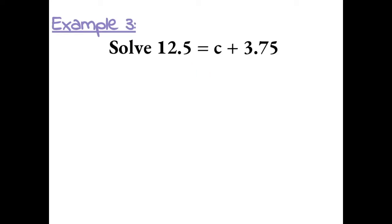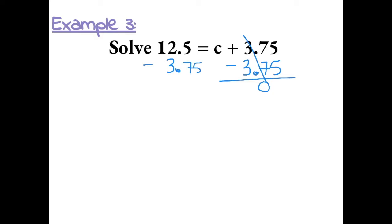Solve 12.5 equals c plus 3.75. We want to get c by itself, so I have to do the inverse operation of adding 3.75, which is to subtract 3.75. These are inverse operations, so they equal 0 and cancel out. Whatever we do to one side of the equal sign, we have to do to the other side, so we have to do 12.5 minus 3.75.